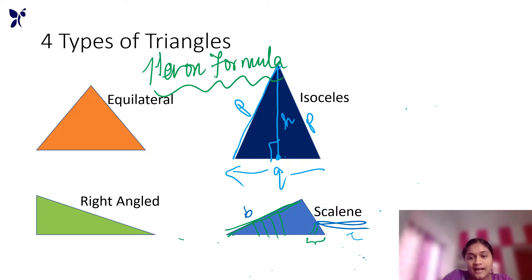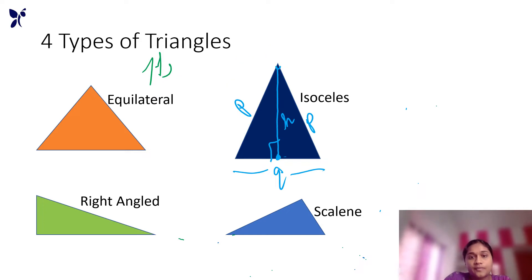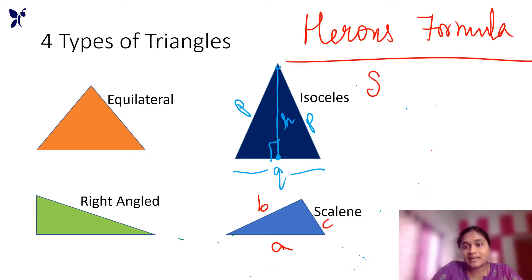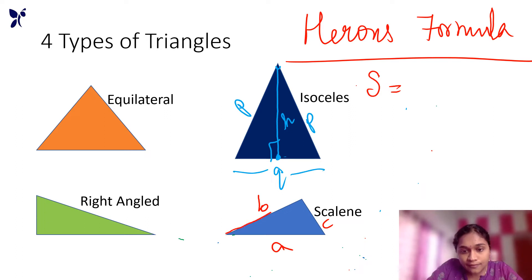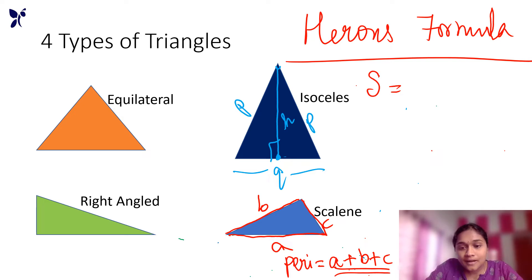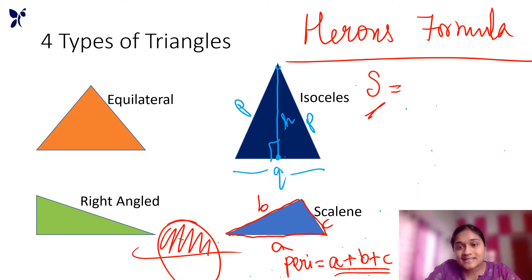Let's write the scalene triangle — it has three unequal sides labeled A, B, C. First, we determine the semi-perimeter. The perimeter is the total boundary of a figure — you add up all the edges. The perimeter equals a plus b plus c, the sum of all side lengths. The semi-perimeter is half of the perimeter of the scalene triangle.